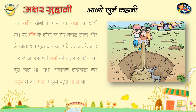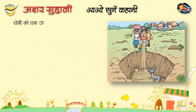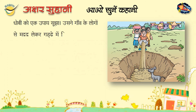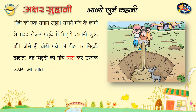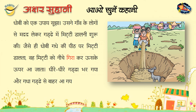धोबी को एक उपाय सूझा। उसने गाँव के लोगों से मदद लेकर कुएँ में मिट्टी डालना शुरू की। जैसे ही धोबी गधे की पीठ पर मिट्टी डालता, वह मिट्टी को नीचे गिरा कर उसके ऊपर आ जाता। धीरे धीरे कुआँ भर गया और गधा कुएँ से बाहर आ गया।